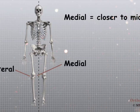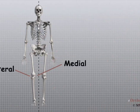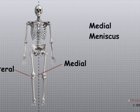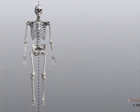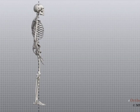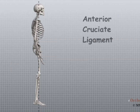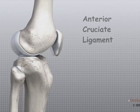The lateral side is the side that is away from the other knee. Structures on the medial side usually have medial as part of their name, such as the medial meniscus. The term anterior refers to the front of the knee, while the term posterior refers to the back of the knee, so the anterior cruciate ligament is in front of the posterior cruciate ligament.